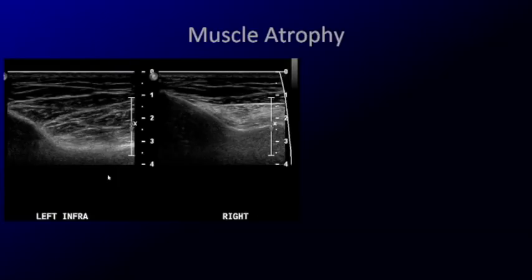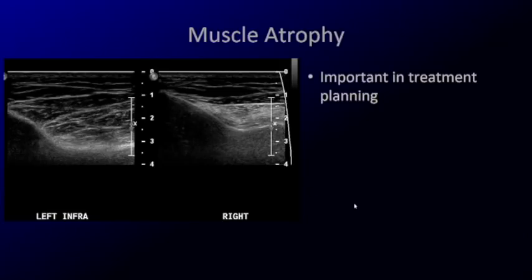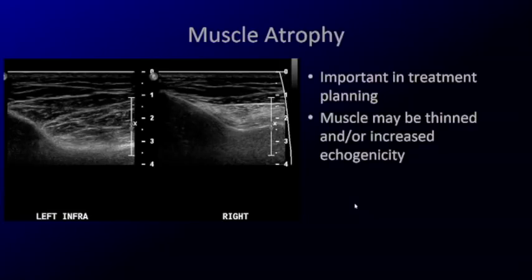In this case we're looking at the infraspinatus muscle. This is the scapula, and this muscle right here is the infraspinatus. Muscle is typically hypoechoic on ultrasound. When you compare it to the affected side, you can see that this muscle is atrophied — it's smaller, asymmetrically smaller — and it's also increased in echogenicity. This is fatty atrophy of the infraspinatus muscle.